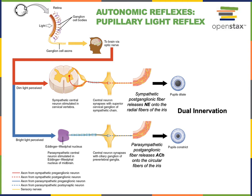The preganglionic fibers travel in the oculomotor nerve, cranial nerve number three, to reach the postganglionic neurons in the ciliary ganglia. The postganglionic fibers extend from the ciliary ganglia through ciliary nerves into the iris, where smooth muscles are the effector cells. The pupillary constrictor muscles of the iris are stimulated by the postganglionic fibers and will contract to decrease the diameter of the pupil, so the pupil constricts in response to high light levels.